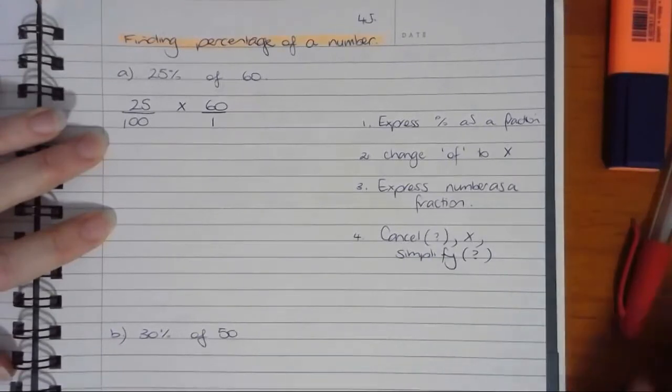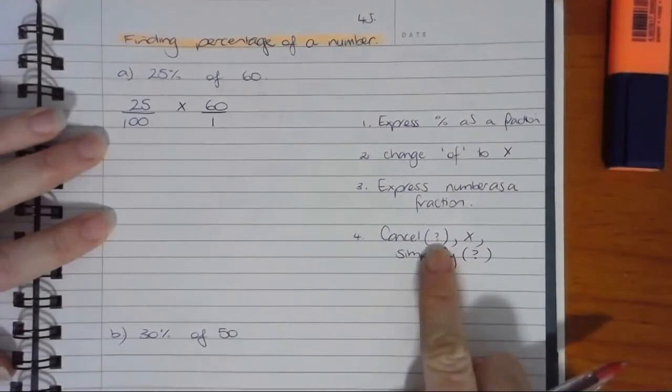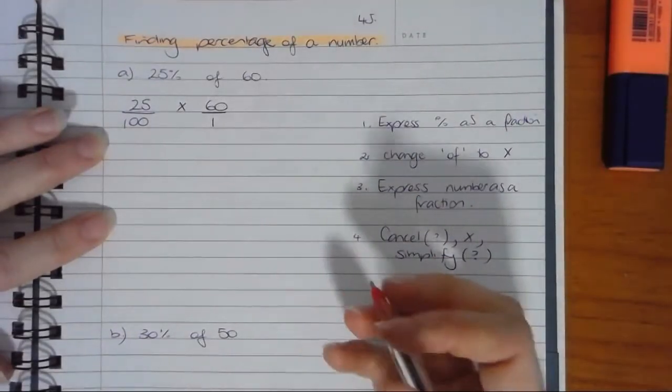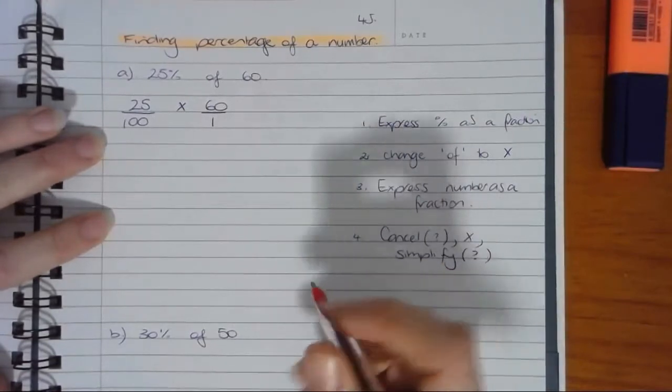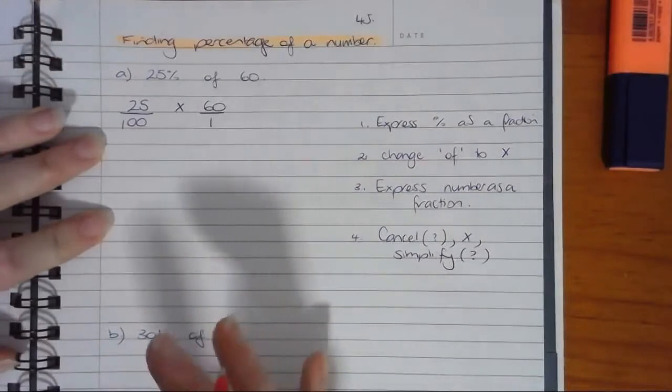The first thing you're going to do is try to cancel. Most of the time you can, but I have put it as a question mark just on the off chance that there's no combination. In this question there's actually two chances, two points at which we can cancel.